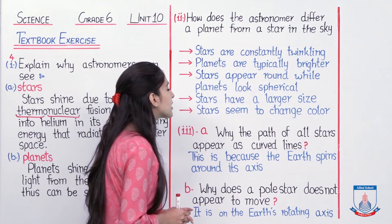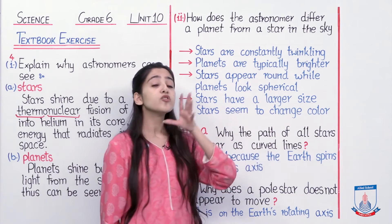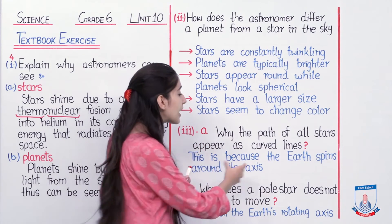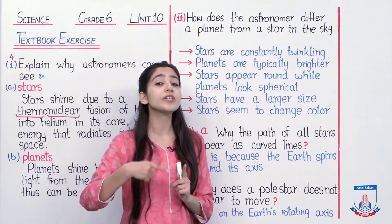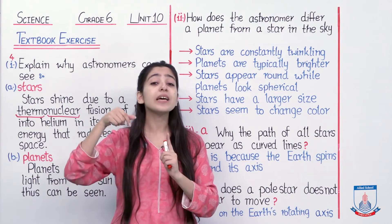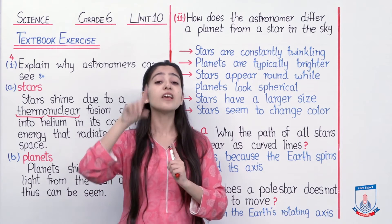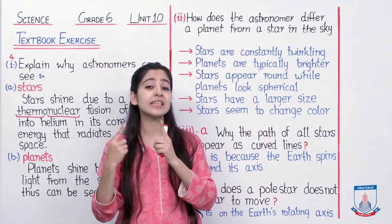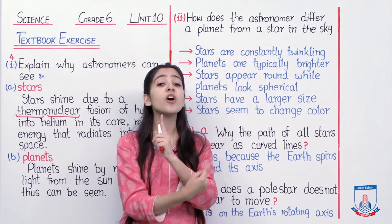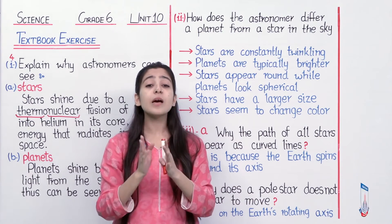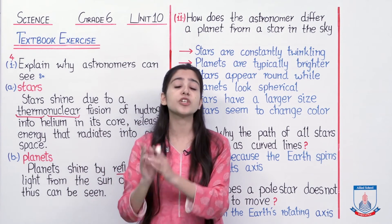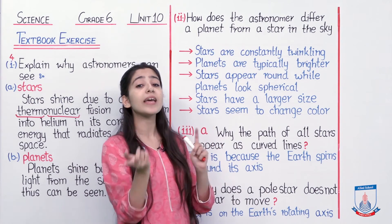Number one is: why does the path of all stars appear as curved lines? Jo stars hain, unko agar dekha jaaye is picture mein, toh humein curved lines kyun nazar aa rahi hain? Uski wajah yeh hoti hai — jo stars hain, woh apni jagah pe hi hain. Magar jo earth hai, woh rotate kar rahi hai. Earth jo hai, do tarhan se spin karta hai aur rotate karta hai: number one is around the sun, aur doosri jo rotation hogi, spinning hogi, that is around its axis. Iska matlab jo earth hai woh apne axis pe bhi ghoomega, aur sun ke irgird bhi rotate karta rahega. Toh jab hum star ki picture lenge, toh woh aayega as curved lines — kyunke woh ek tarhan se spin kar raha hai, hamaara earth.